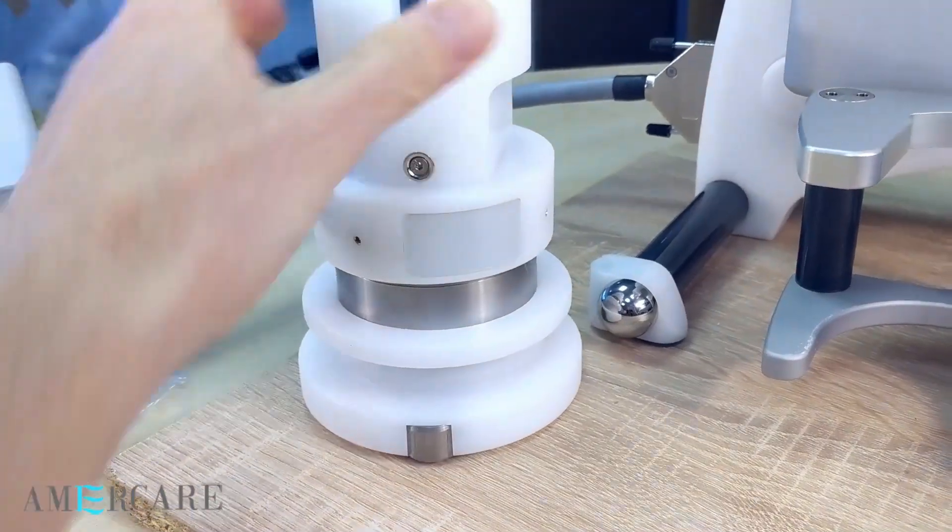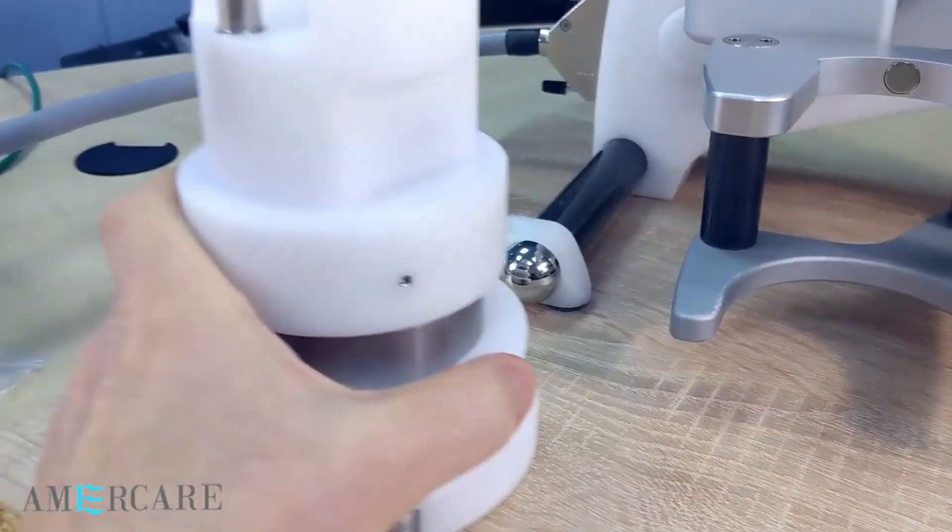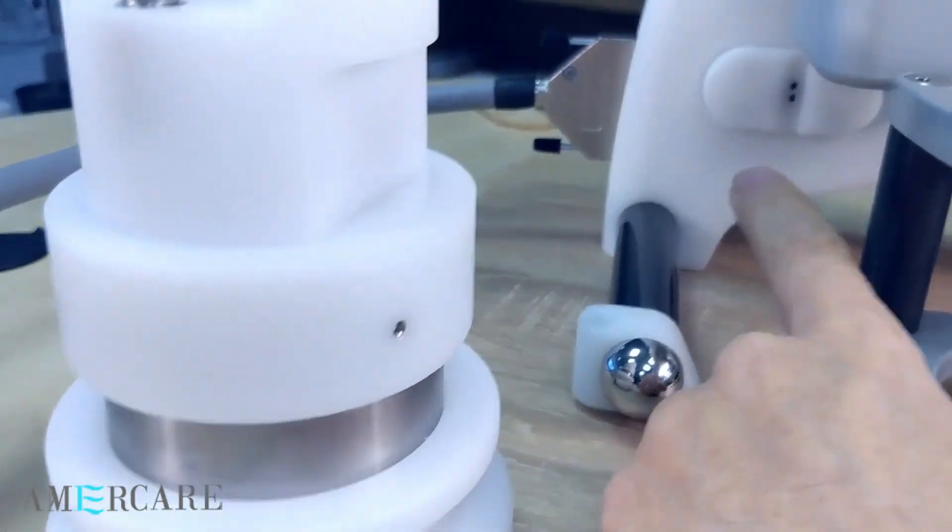The side of the vial shield has a reflective area here. When in position, this is picked up by the optical sensor on the body.